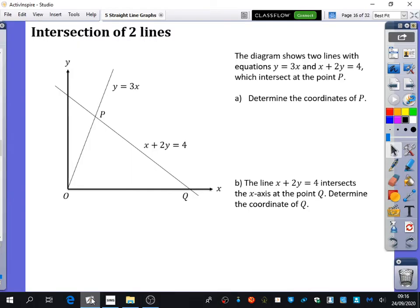So we are looking at the next exercise, exercise 5D, which looks at the intersections of two lines. I've got here a diagram showing two lines with equations y equals 3x and x plus 2y equals 4, which intersect at point P.